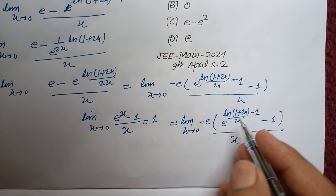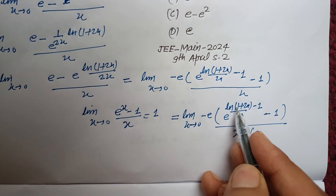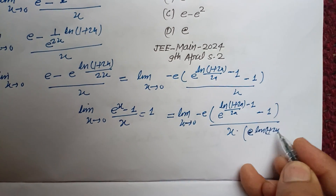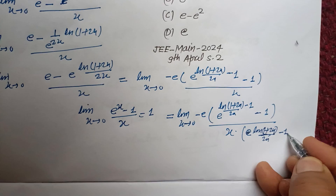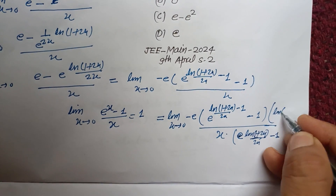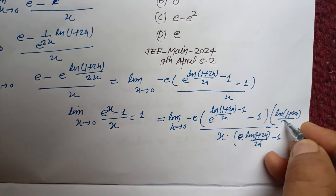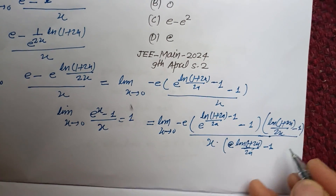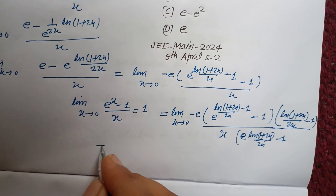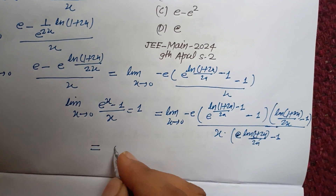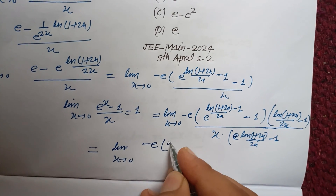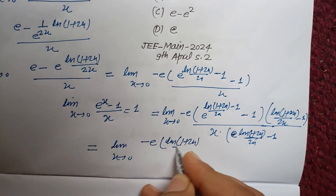We divide and multiply by [ln(1+2x)/(2x) - 1]. So the expression becomes: limit as x tends to 0 of minus e times [ln(1+2x)/(2x) - 1] times the standard limit part, divided by x.